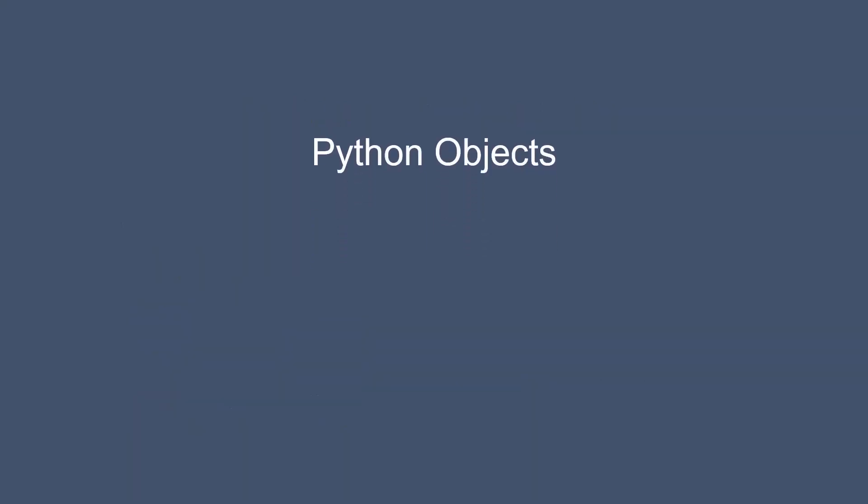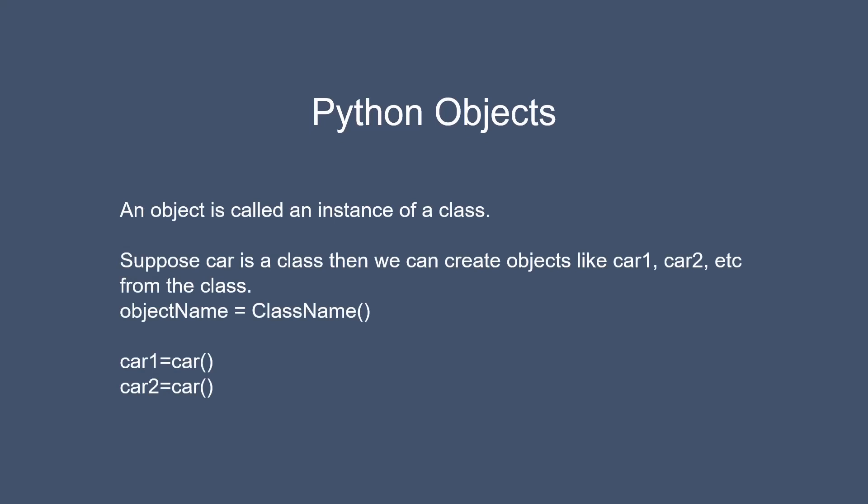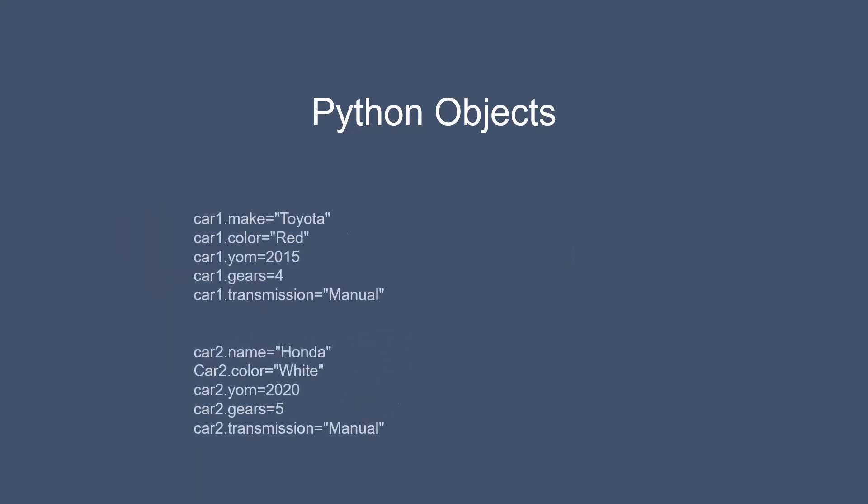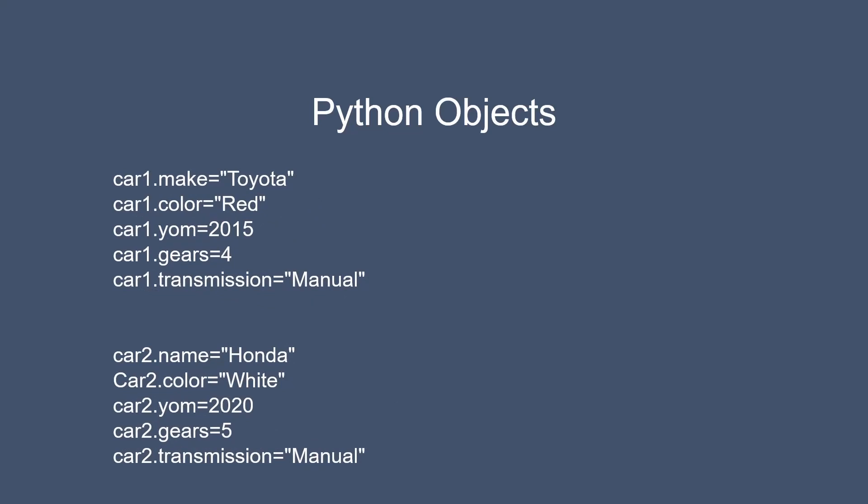An object is called an instance of a class. Suppose car is a class, then we can create objects like car1 and car2 from the class. All the attributes of the class will be automatically assigned to the objects created by using that class. For example, we have created two objects car1 and car2 using the car class, then all the specifications of the class like make, color, transmission, and gears will be assigned to both objects. We can assign different values to each object.